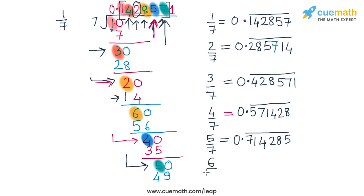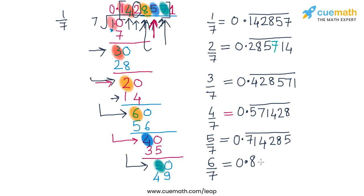Finally, for 6 by 7, we start from the stage in 1 by 7 where the remainder was 6, and the corresponding multiplier was 8. So 6 by 7 starts from 0.8, and then the same cycle of digits continues: 8, 5, 7, 1, 4, 2 with a bar on this block of 6 digits.